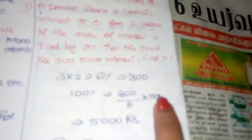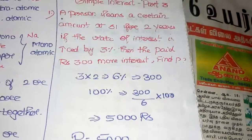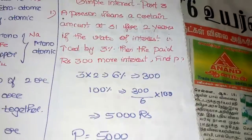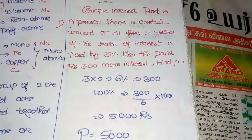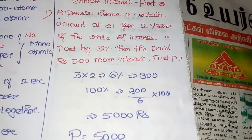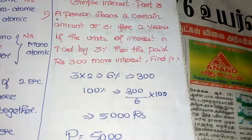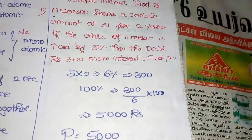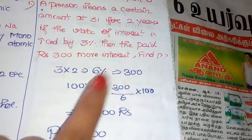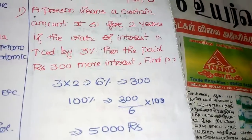100 percentage is equal to 300 divided by 6, multiplied by 100 = ₹5,000. So the loan amount (principal) is ₹5,000. For two years, with the rate of interest increased by 3 percentage, the 300 extra interest gives us 100 percentage = ₹5,000. That is the principal.